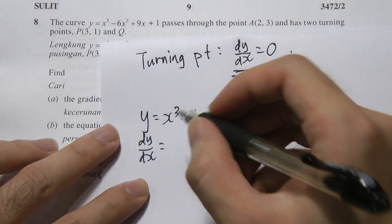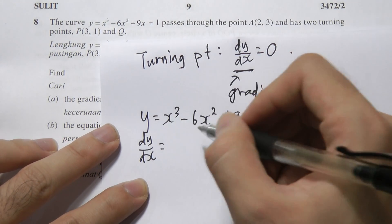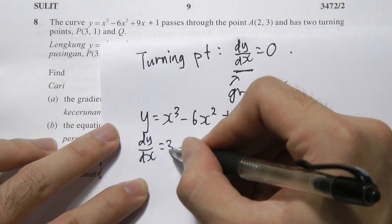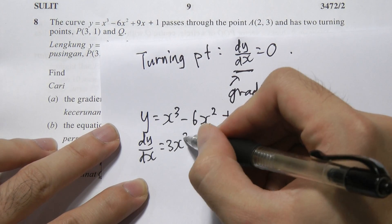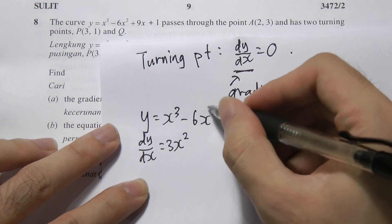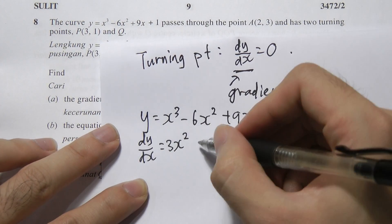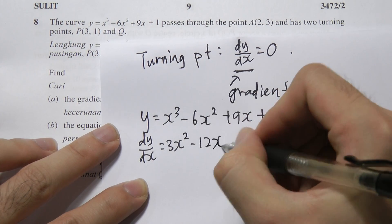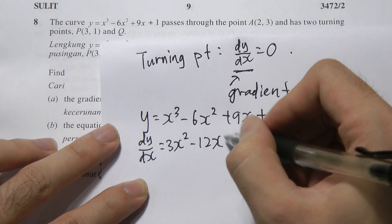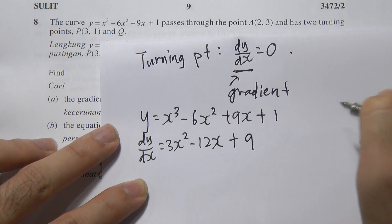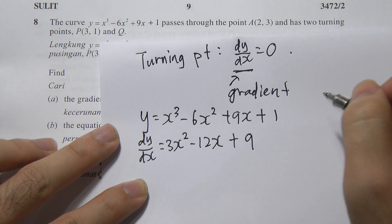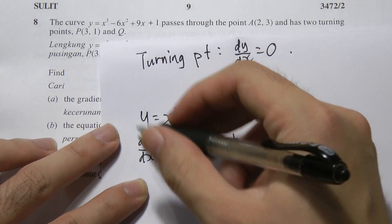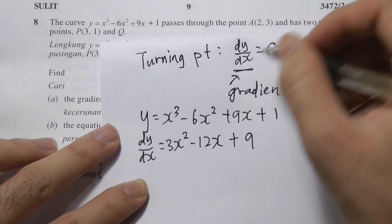Differentiating: bring the power in front and reduce the power by one. We get dy/dx = 3x² - 12x + 9. This is the gradient function of the curve.